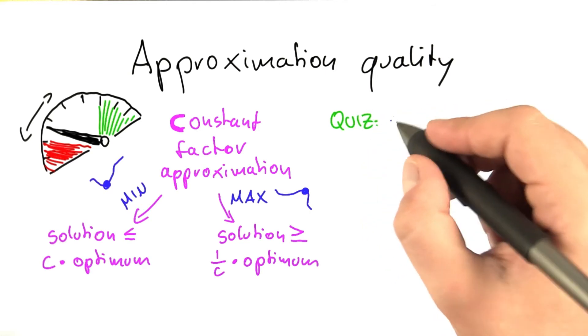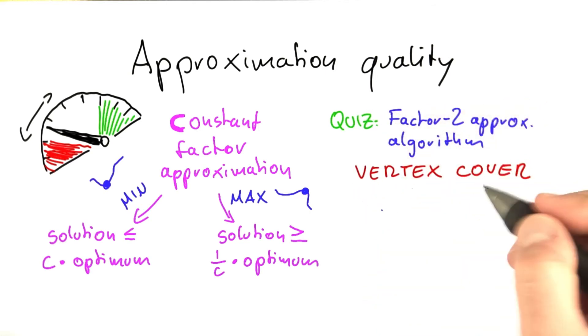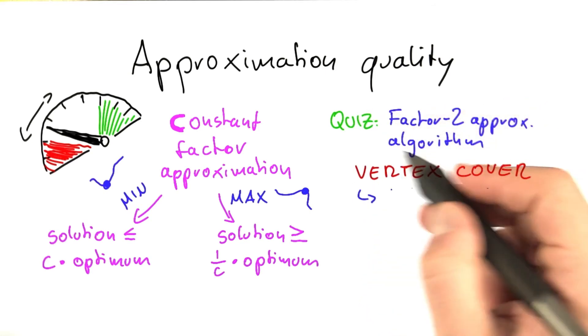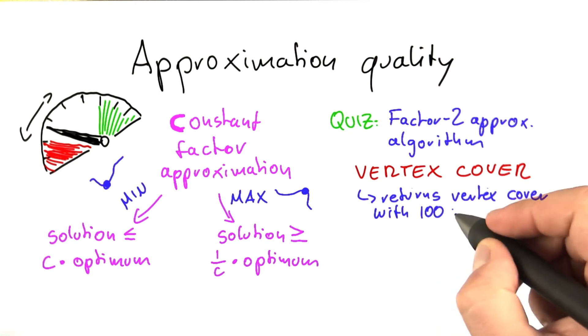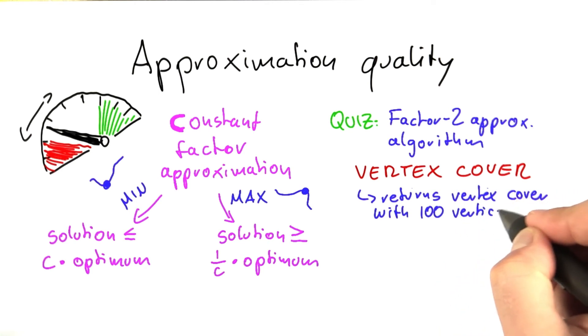So let's do a quick quiz to practice this. So say you have a factor 2 approximation algorithm, which means that c equals 2. So you have a factor 2 approximation algorithm for vertex cover, you run the algorithm on an input, and it returns to you a vertex cover of size 100.